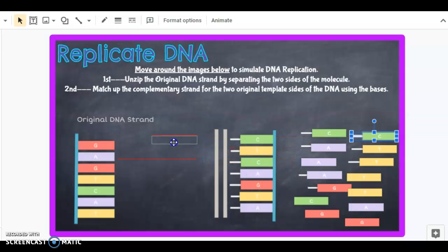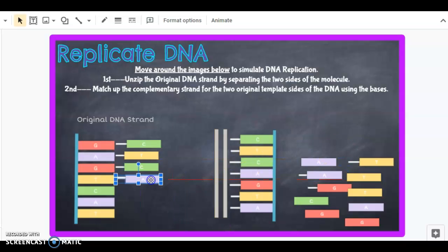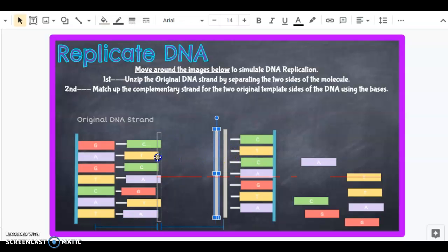G always pairs with C. A always pairs with T. G always pairs with C. T always pairs with A. And you can see those hydrogen bonds joining the bases together. C with G, A with T, and T with A. I didn't line those up perfectly but you get the idea. And remember that each of these bases has a sugar and phosphate attached, so they come with their own backbone.